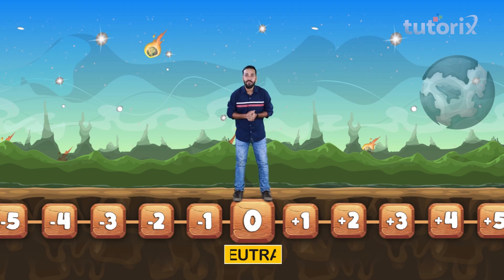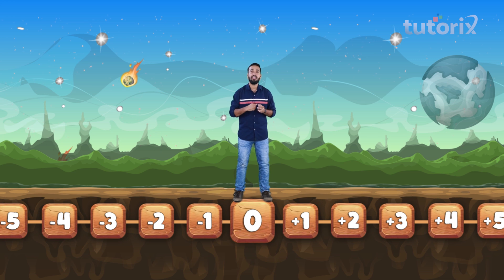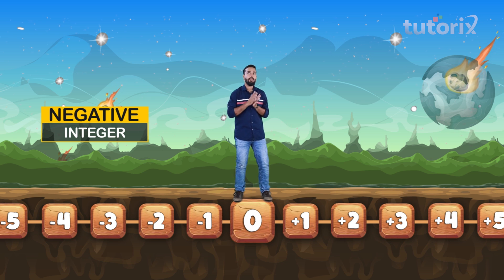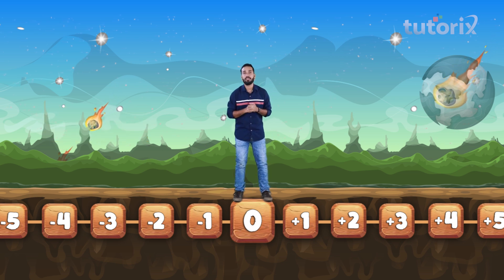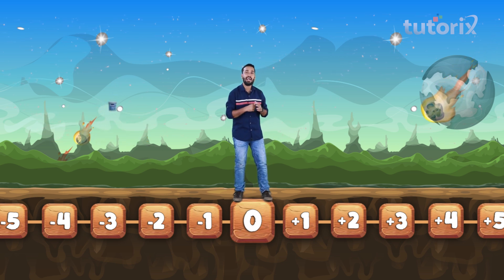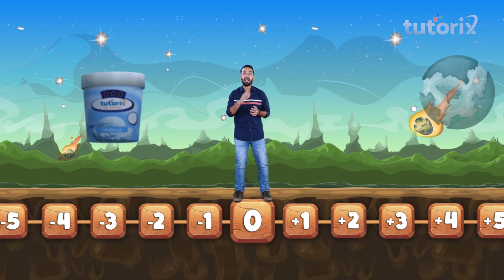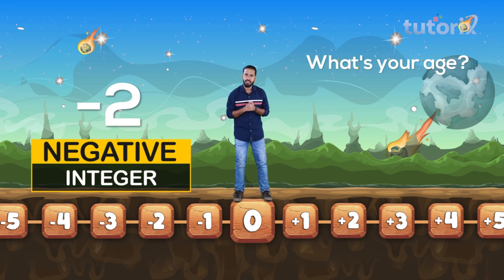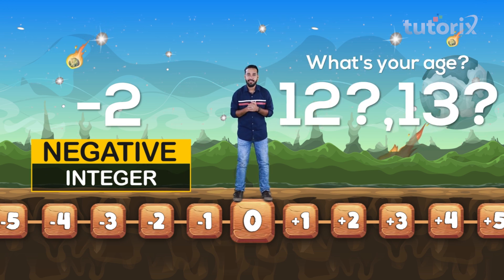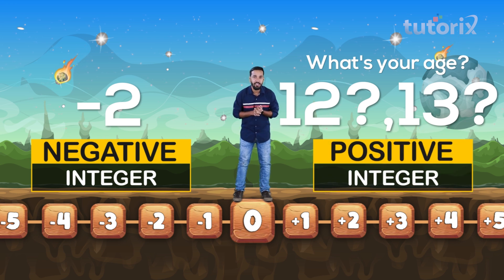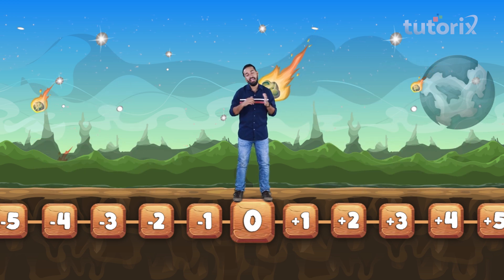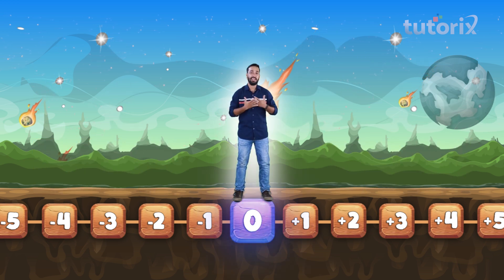Can you tell me a real-life example of a negative integer? Think about it. Let's think about the temperature below which we had to store the ice cream. What was it? Correct — it was minus two. You are a bright child. What's your age? Twelve, thirteen maybe? See, that's a positive integer. And a real-life example of zero, in the words of my dad, is me.